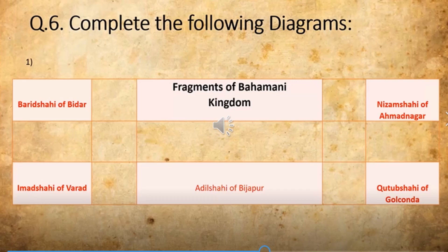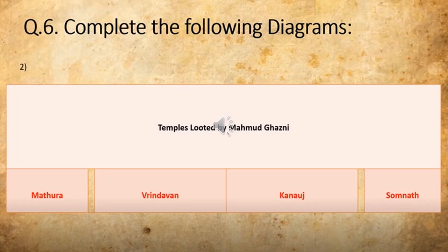We will move on to the next one — the second one in this. Complete the following diagram: the question asked here is temples looted by Mahmud Ghazni. The four correct answers are: Mathura, Vrindavan, Kannauj, and Somnath.